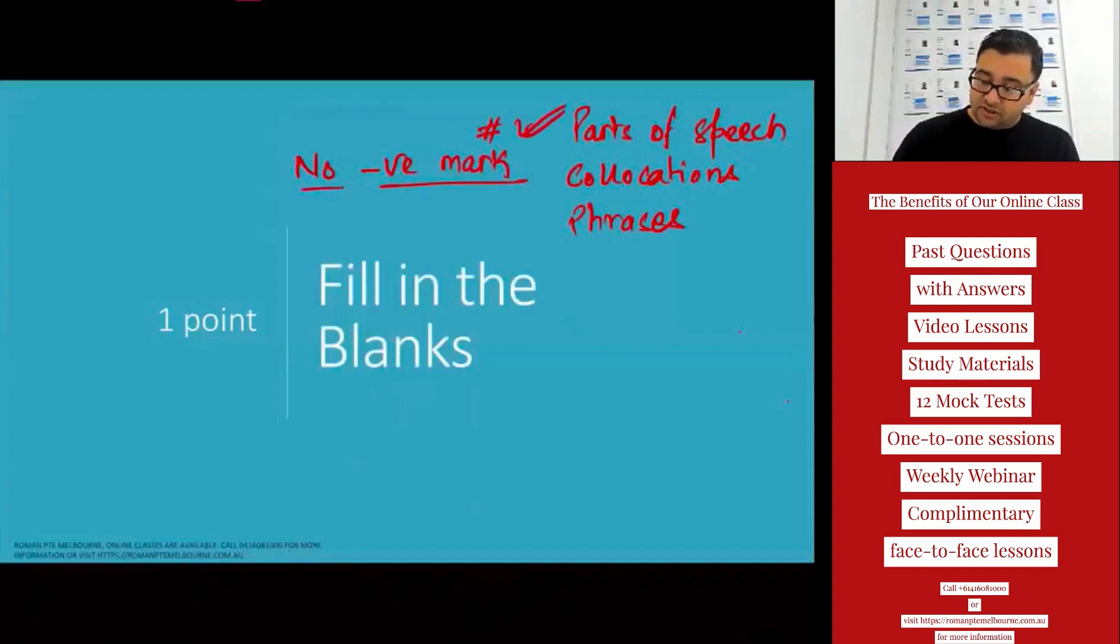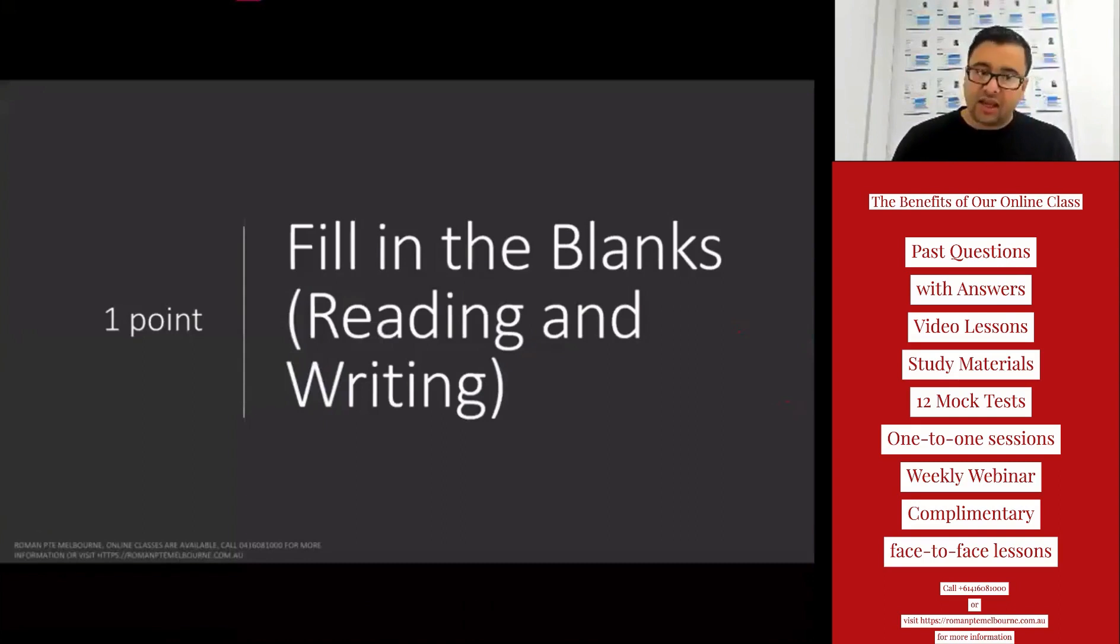The other question is fill in the blanks reading and writing. Again, this is drop down menu type—you have four options here. You are supposed to select one. Remember this contributes to writing as well, so you need to be careful about the section because this is usually more difficult than the previous fill in the blanks question, but it can influence your writing as well. So you need to make sure that you know how to do these questions. And in order to answer these questions, there are three things again that you need to know.